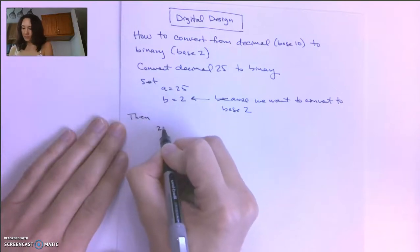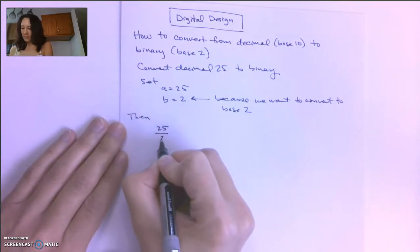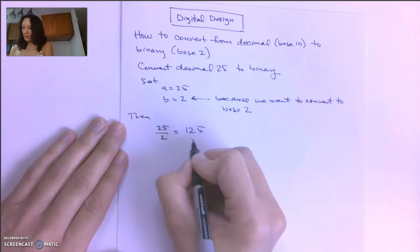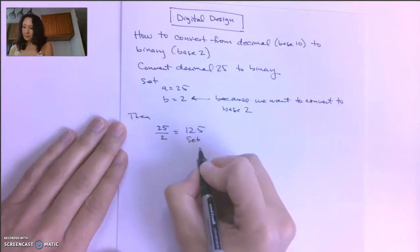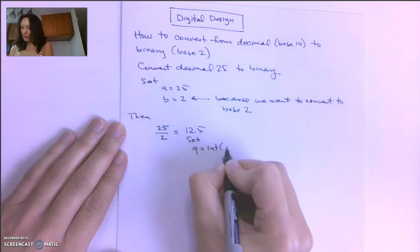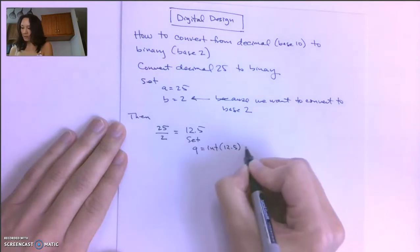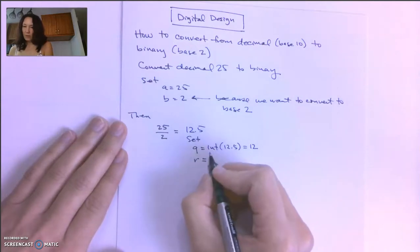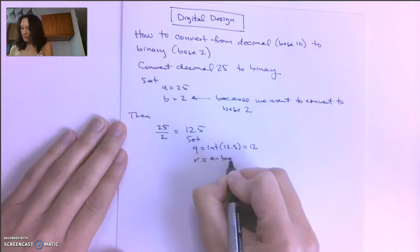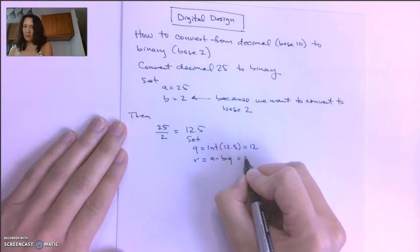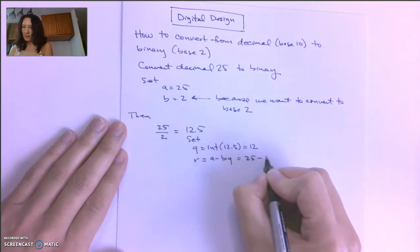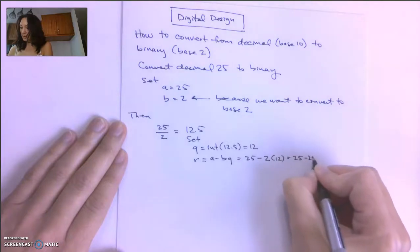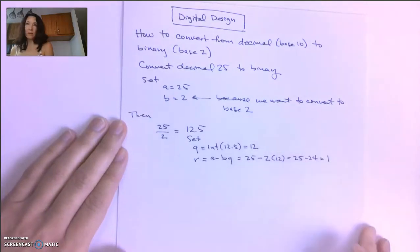We're going to take 25 divided by 2 — A divided by B — and that gives us 12.5. So we set Q equal to the integer part of 12.5, which is just 12. And we set R equal to A minus BQ, which is 25 minus 2 times 12, or 25 minus 24, so our remainder is 1.